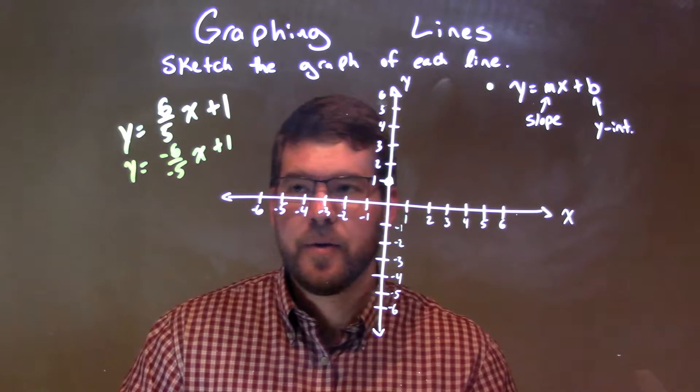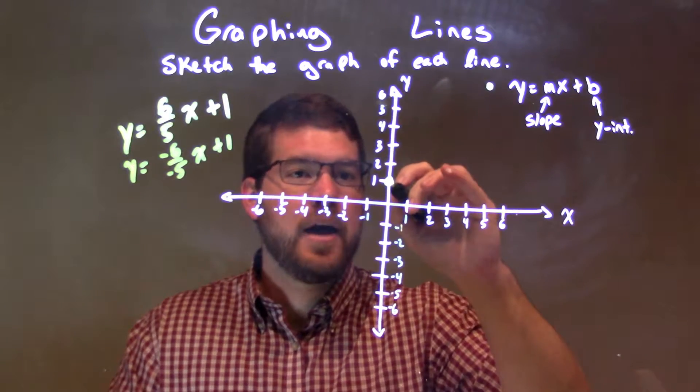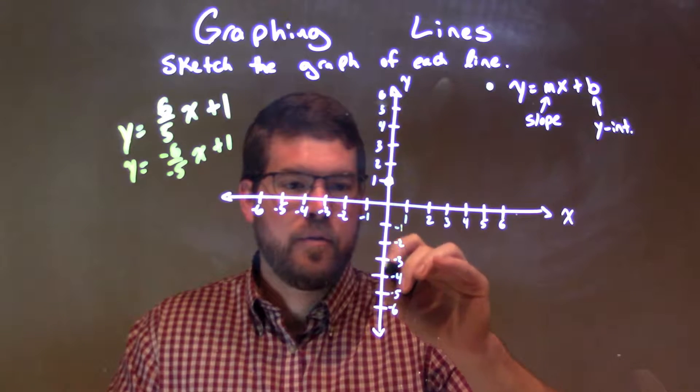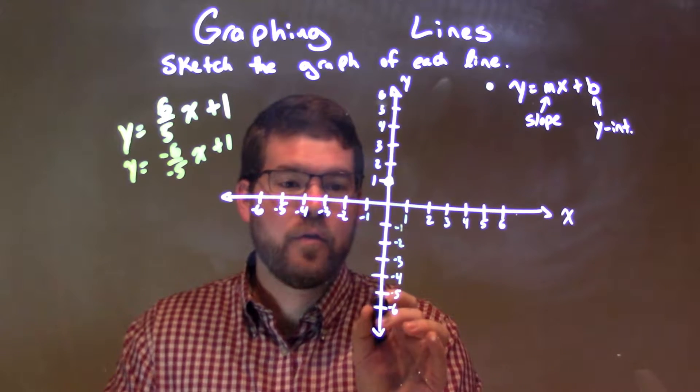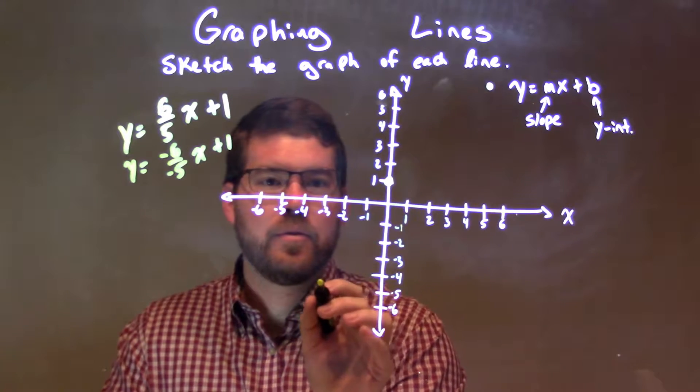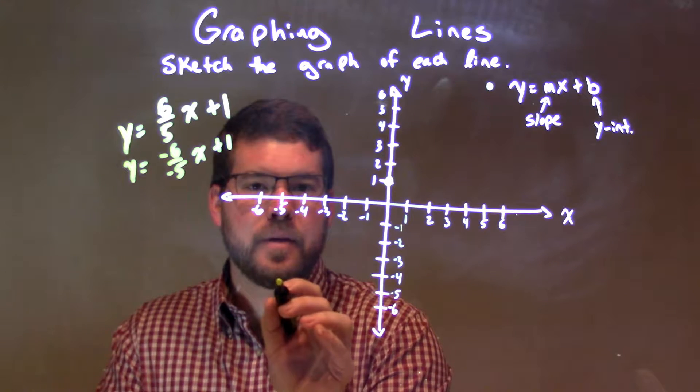So what you can do here, if you want to, is we can go down 6 units, 1, 2, 3, 4, 5, 6 units, and then over 5 units, 1, 2, 3, 4, 5, right here.